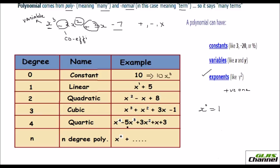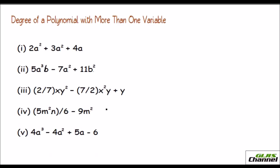When the degree is 4, it is called a quartic polynomial, where the highest degree is 4. As the degree increases, solving the polynomial becomes harder. We can also refer to them as fourth-degree, third-degree, or n-degree polynomials. For a polynomial with one variable, the degree is simply the highest exponent present.